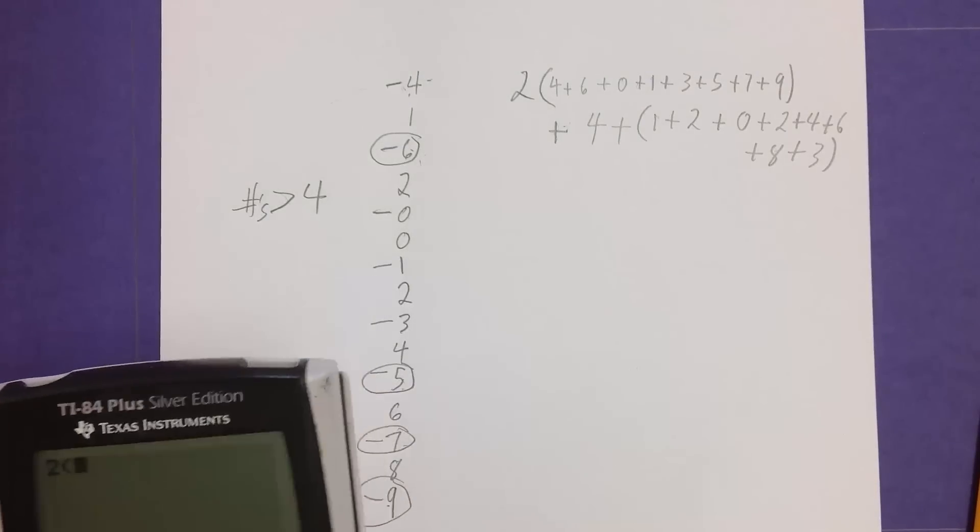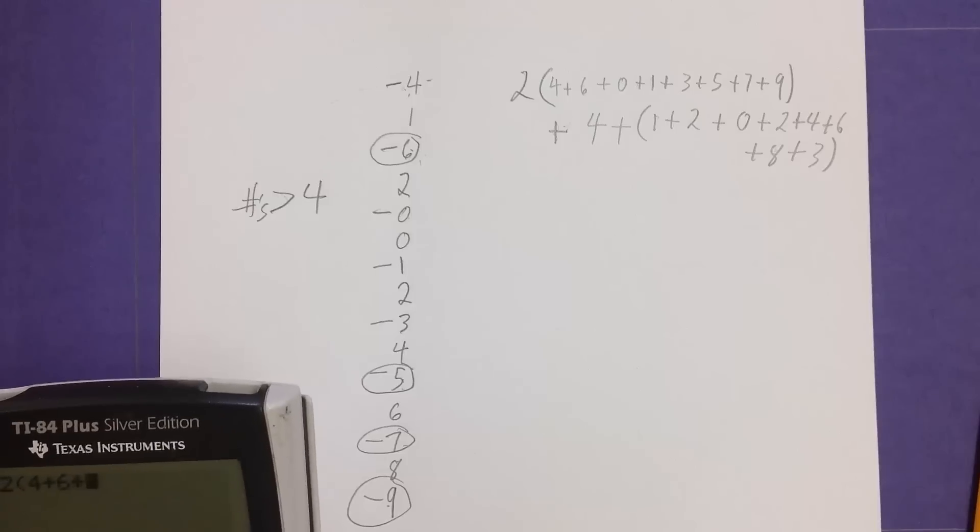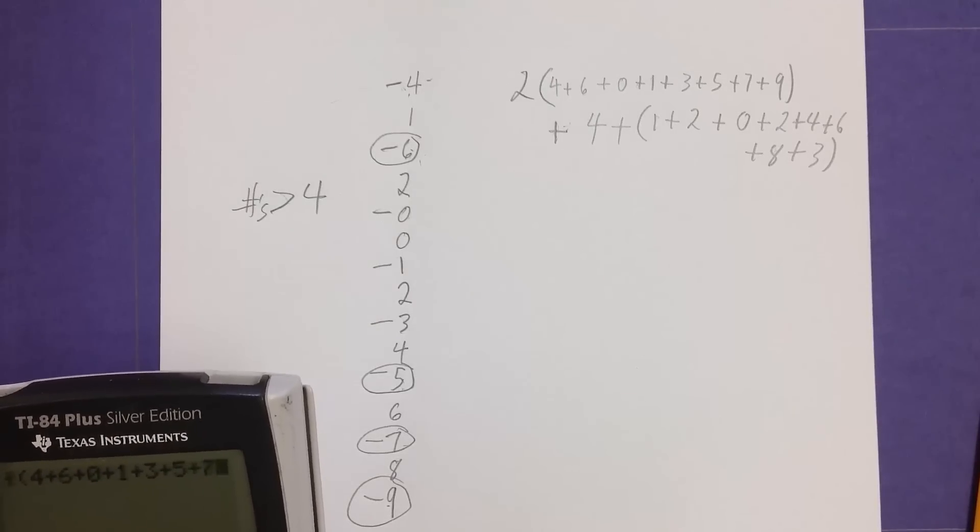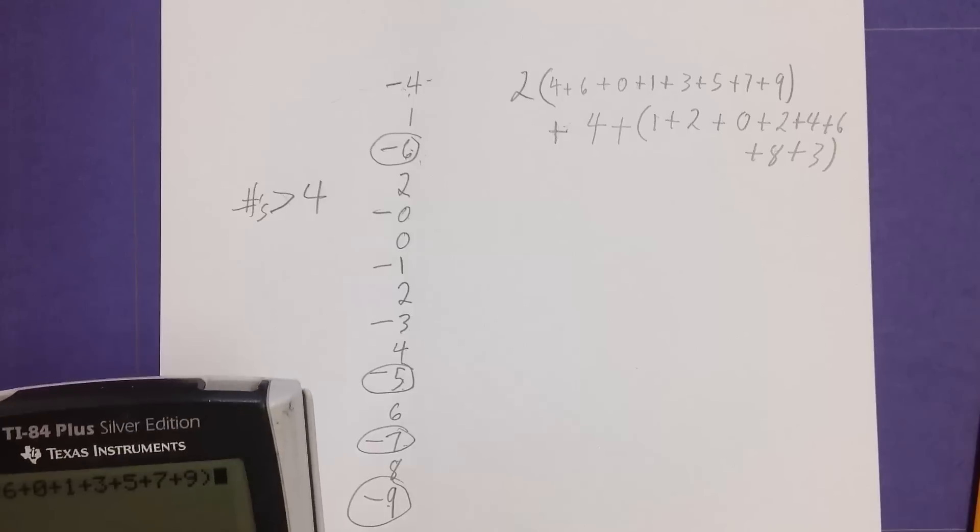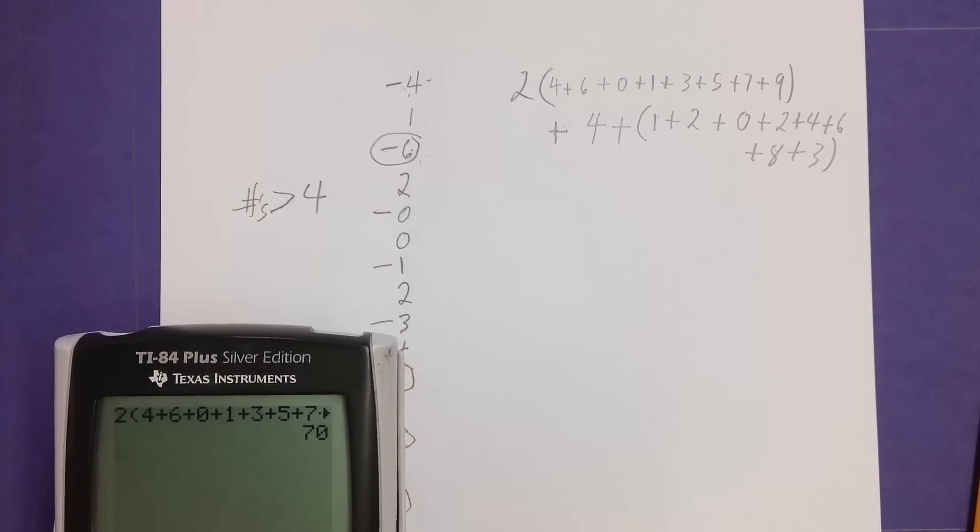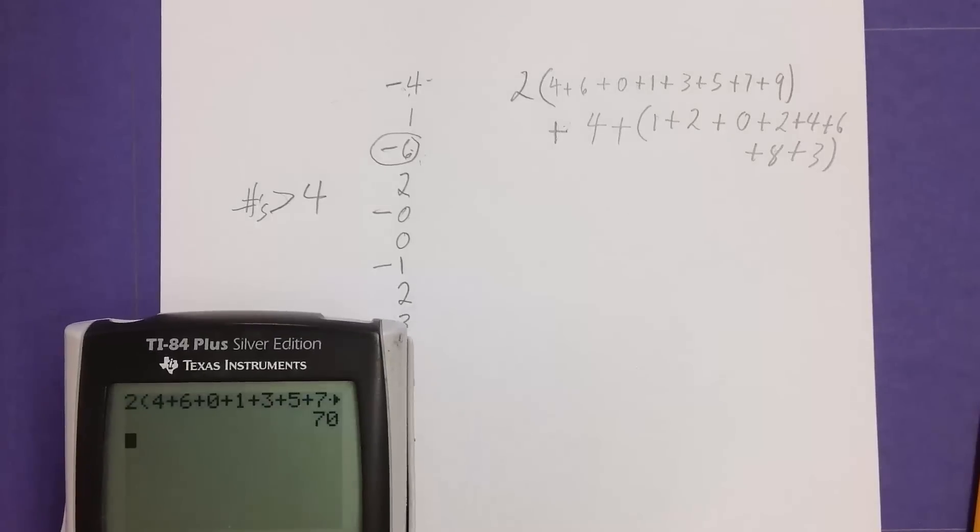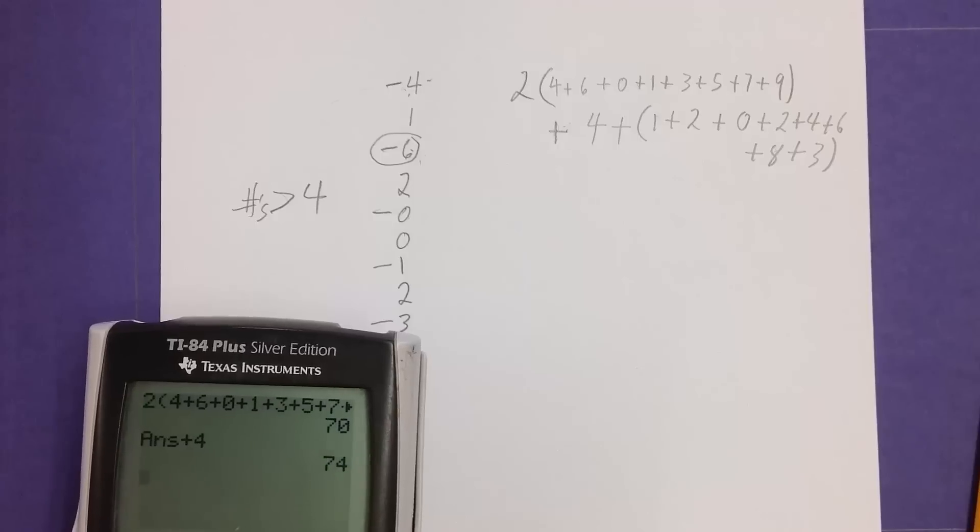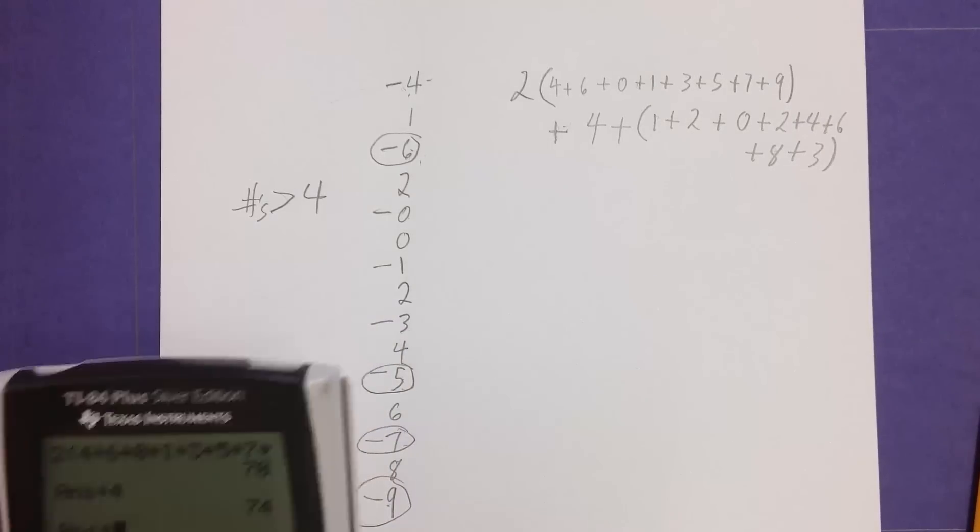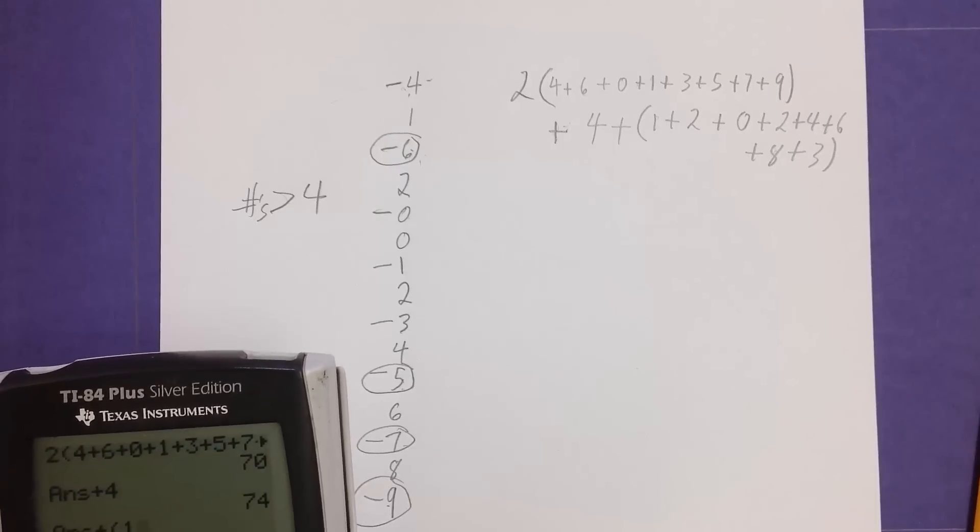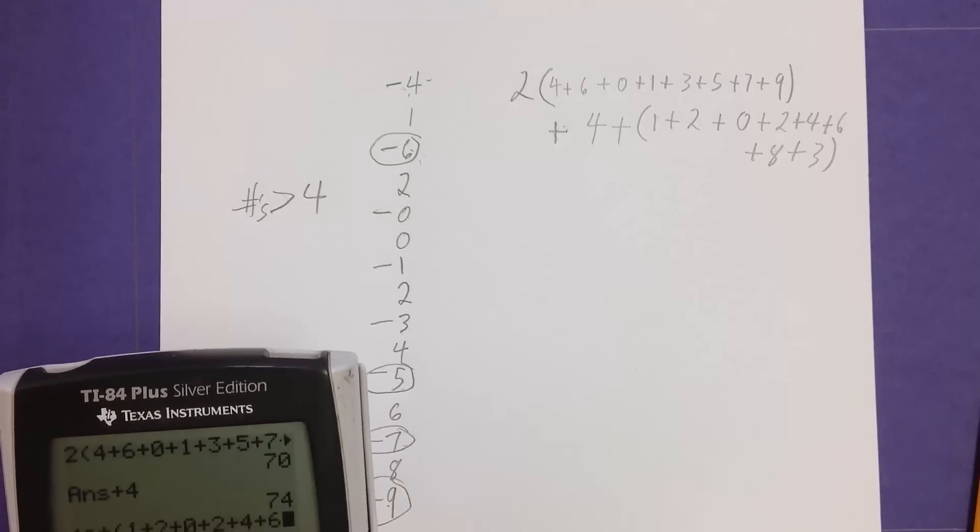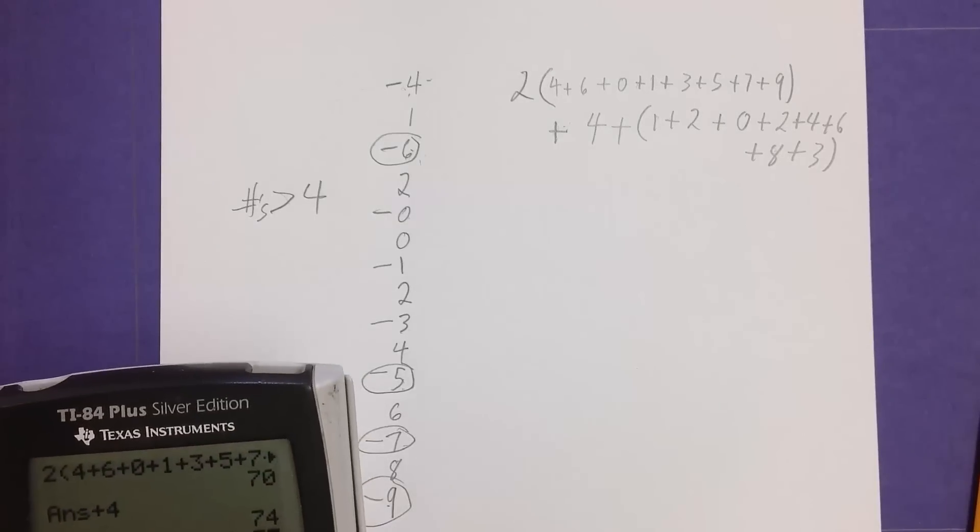2 times 4 plus 6 plus 0 plus 1 plus 3 plus 5 plus 7 plus 9. The good thing is that these are all single-digit numbers. I'm going to just push enter. So I got 70 plus another 4, 74, plus everything else. 1 plus 2 plus 0 plus 2 plus 4 plus 6 plus 8 plus 3.